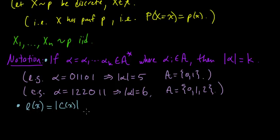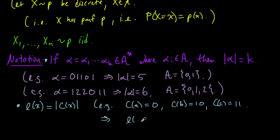So for example, maybe give you another quick example. So let's say our code is c of a is 0, and c of b is 10, and c of little c is 11. Then what would we have, l of a would be the length of this code word which is 1, l of b would be 2, and l of c would also be 2.